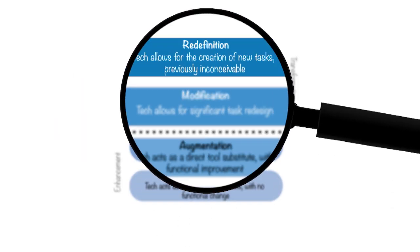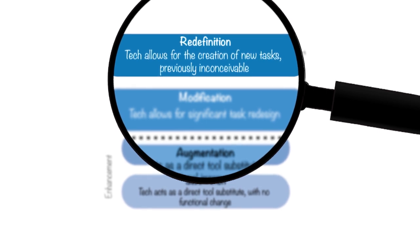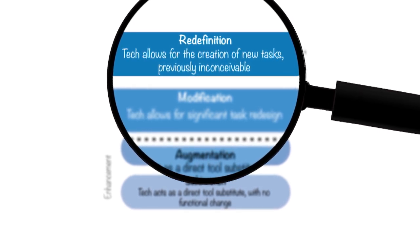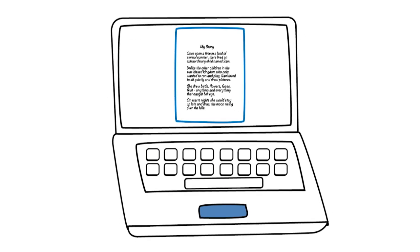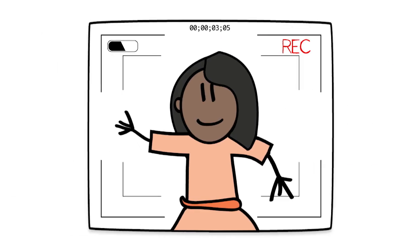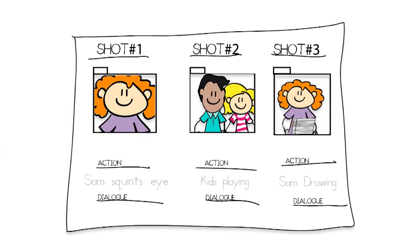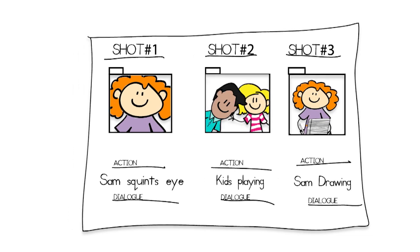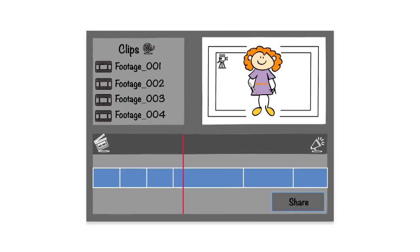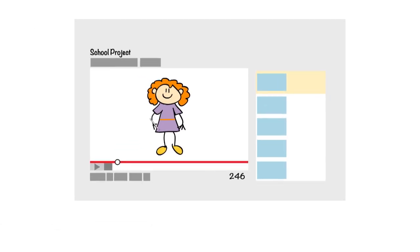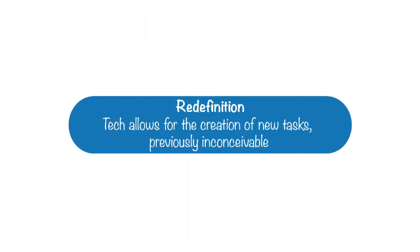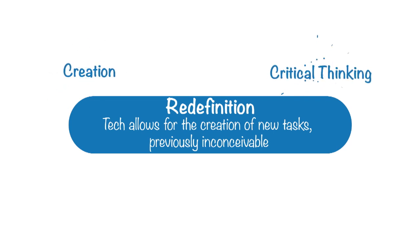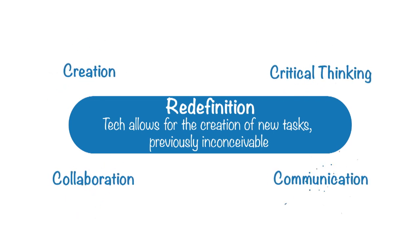At the top stage, redefinition, technology allows for the creation of entirely new tasks that were previously inconceivable. What if students transform their written stories into multimedia productions? After creating storyboards, students film scenes, edit clips, and add music. They can publish the videos and receive feedback from voices across the globe. In this case, technology redefines the story writing task to include media creation, critical thinking, collaboration, and communication.